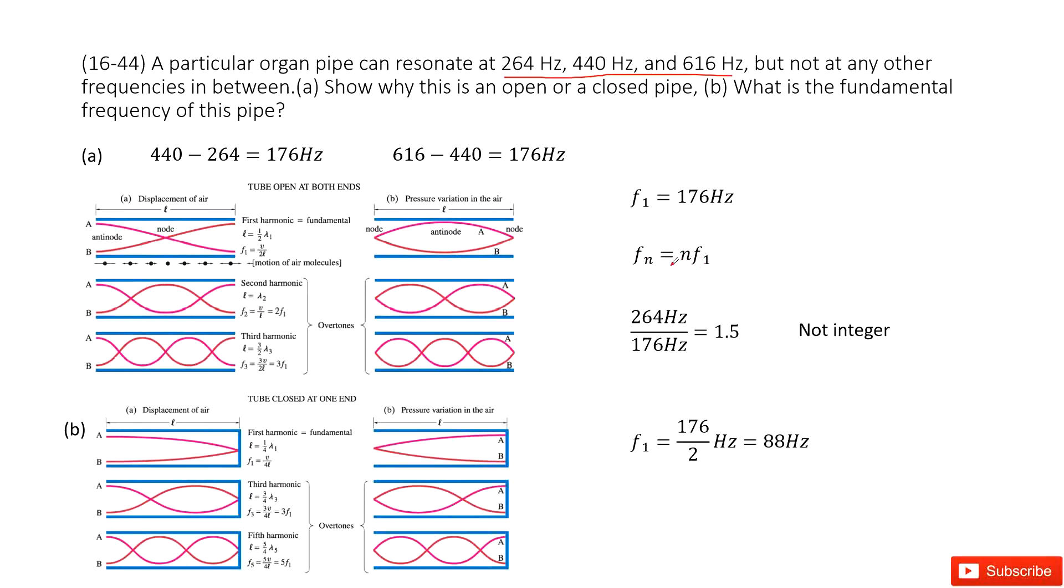The difference between two consecutive frequencies is F1. For example, F2 minus F1 equals F1 because F2 is 2F1. Similarly, F3 minus F2 equals F1 because 3F1 minus 2F1 is F1.